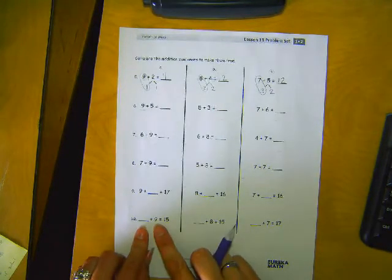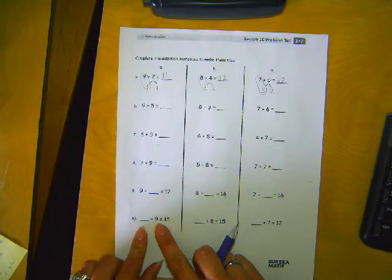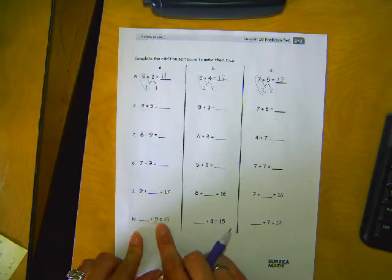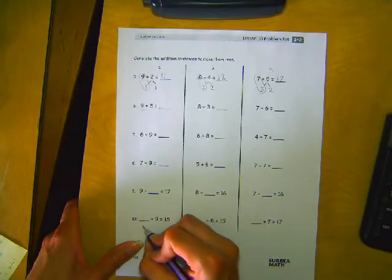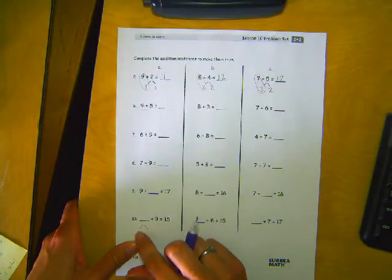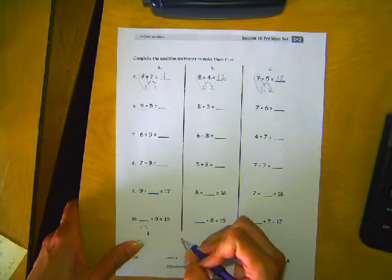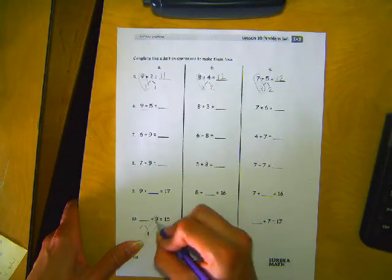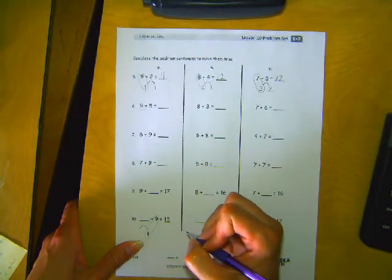Let's skip down to 10 before I have you finish the rest on your own. Blank plus 9 equals 15. Well, this number needs to be broken up into 2 pieces. One of those pieces will be a 1 to make this a friendly 10. So if we know this is 10 and we need to get to 15, what's the other number?